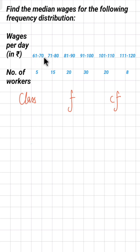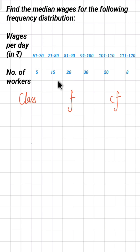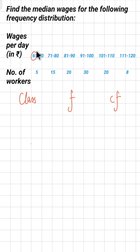There is one problem with these classes. If you see the upper limit of the first class it is 70, but the lower limit of the next class is not 70 — they are not the same. So we have to adjust them. The method is: first find the difference between these two numbers which were supposed to be equal. Their difference is 1, and half of 1 is 0.5.